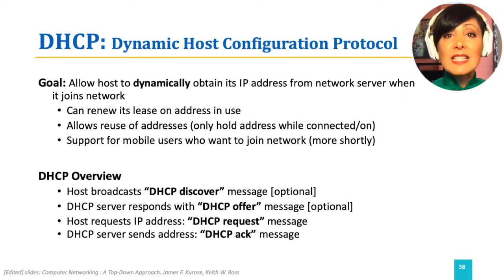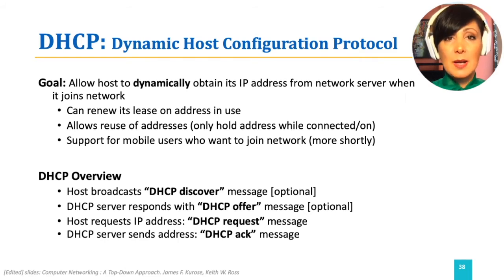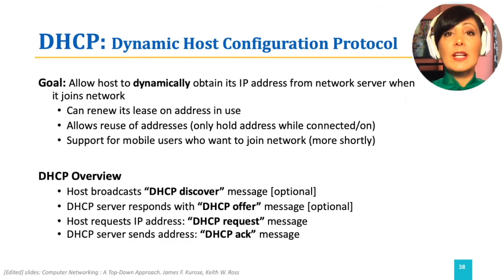The next step is DHCP server offer. The server responds to the request with a DHCP offer message that it broadcasts to all the nodes within the subnet. The first two steps are optional, since they may only happen for a newcomer host. Next, the host sends the DHCP request, using the parameters in the DHCP offer. The last step is a DHCP ACK, where the server responds to the DHCP request message confirming the required parameters.